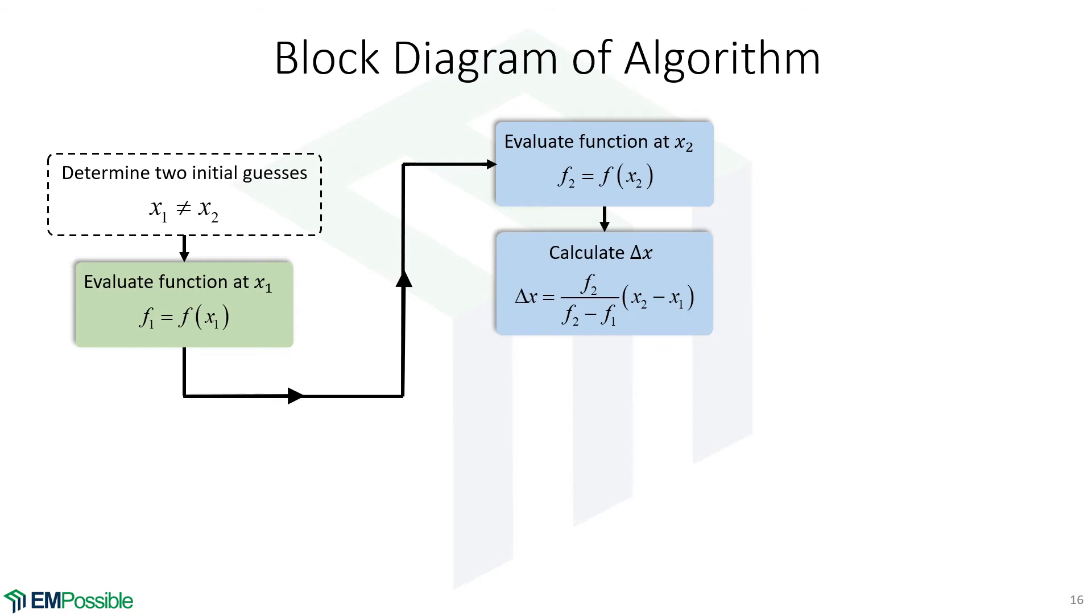Now what we'll do is we'll calculate a delta x. This is how much we're going to move our second point to get our third guess at the root. So we calculate this delta x.